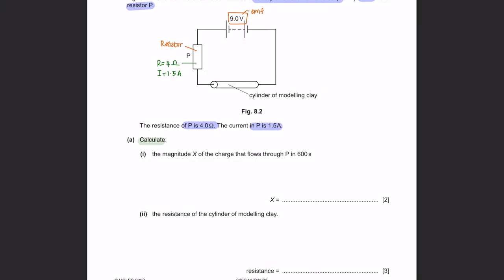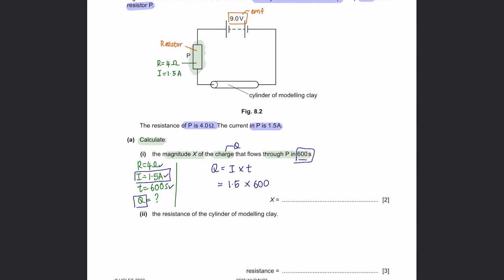Question E, Part 1: Calculate the magnitude X of the charge that flows through P in 600 seconds. We have resistance, current of 1.5A, time of 600s, and we're looking to find Q. The formula for charge is Q = current × time. Substituting: Q = 1.5 × 600 = 900 coulombs.